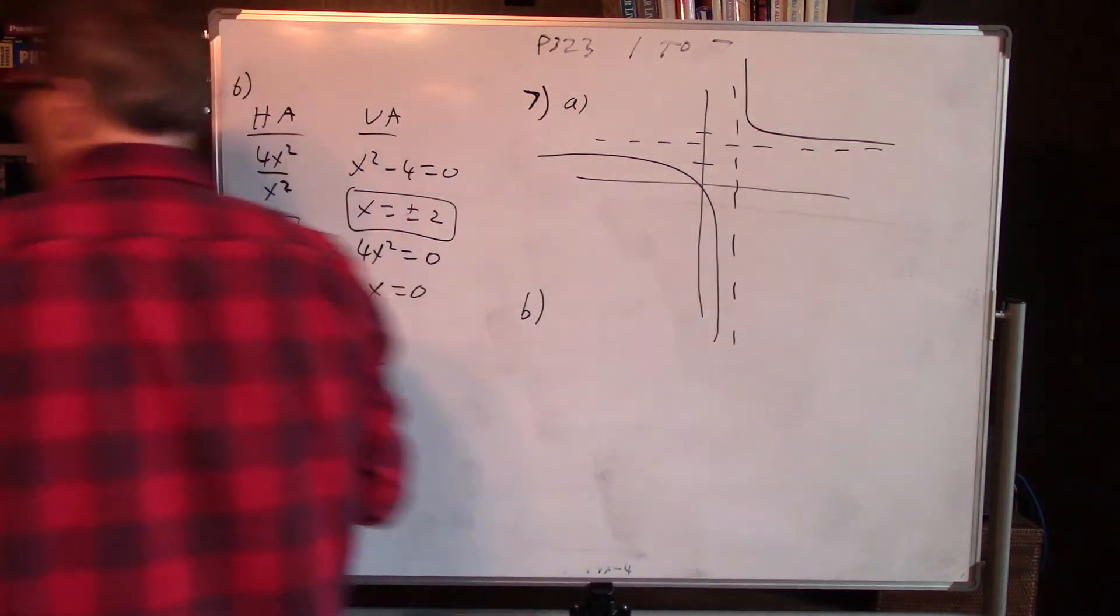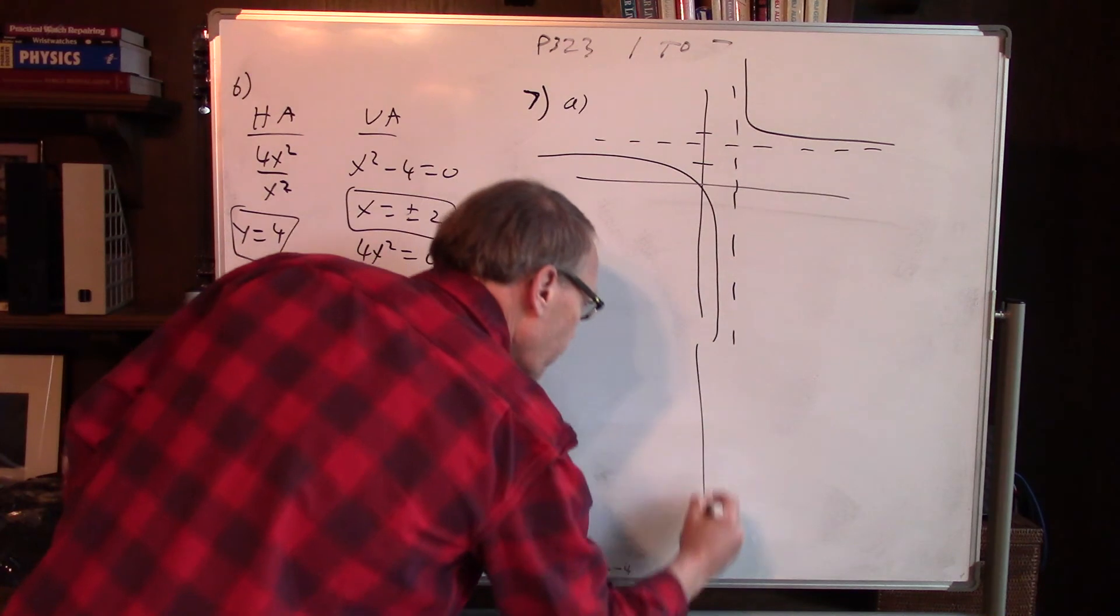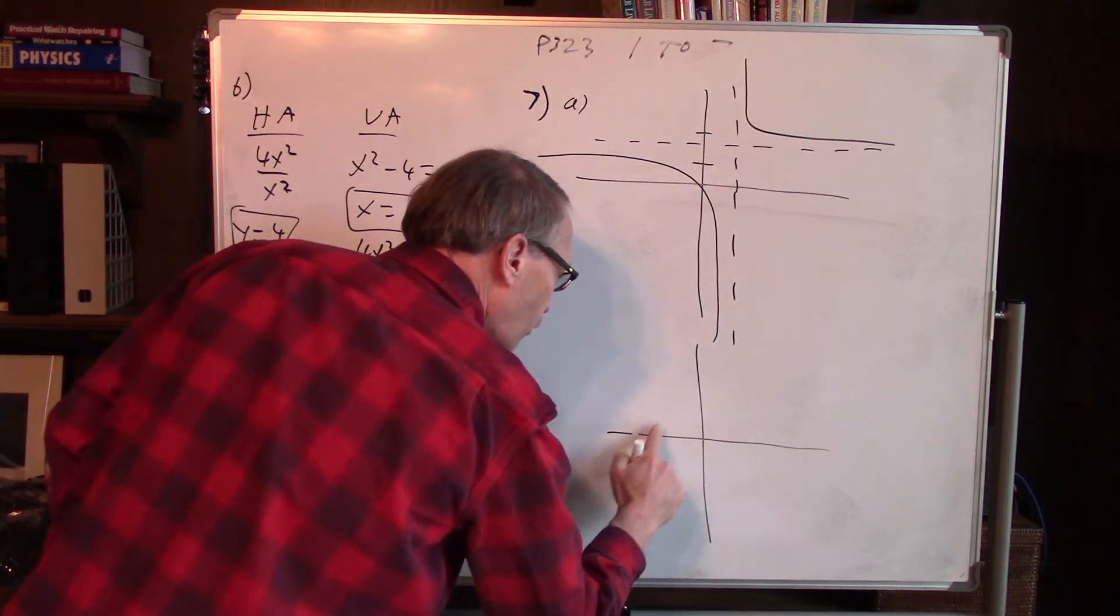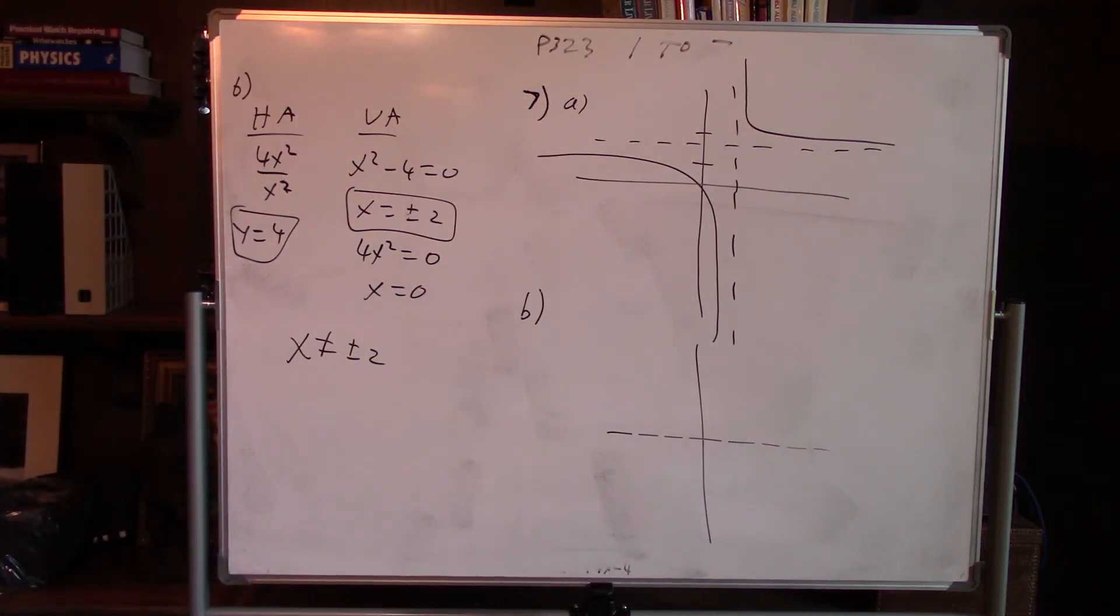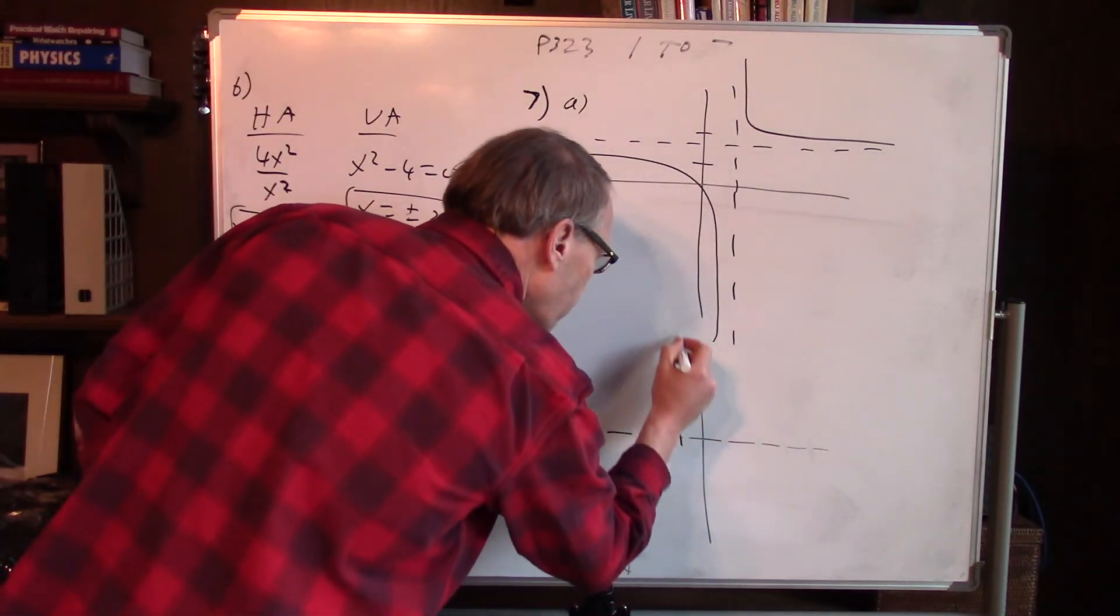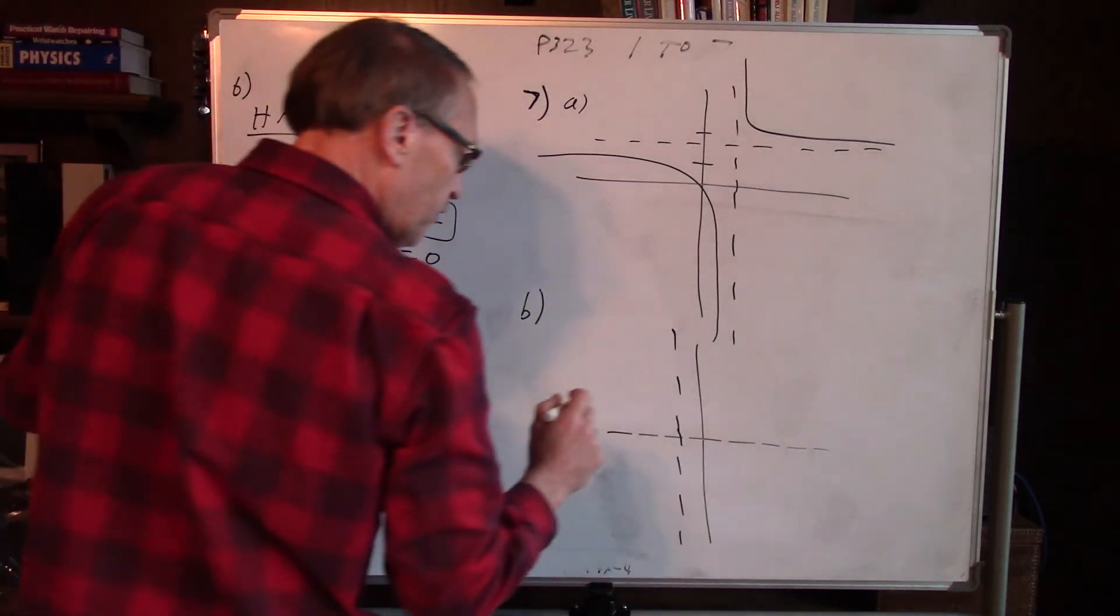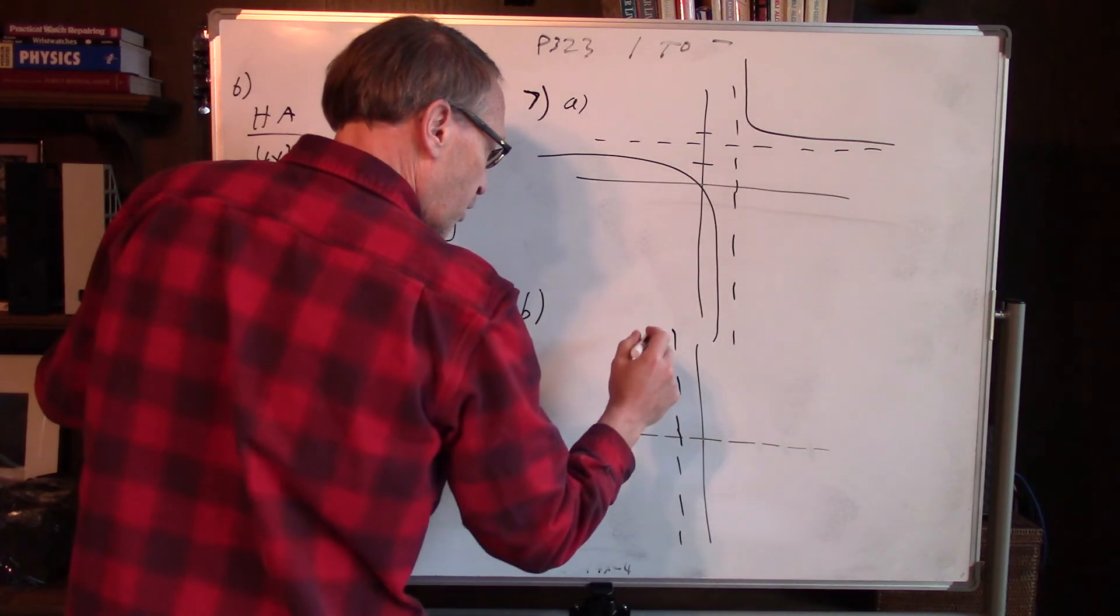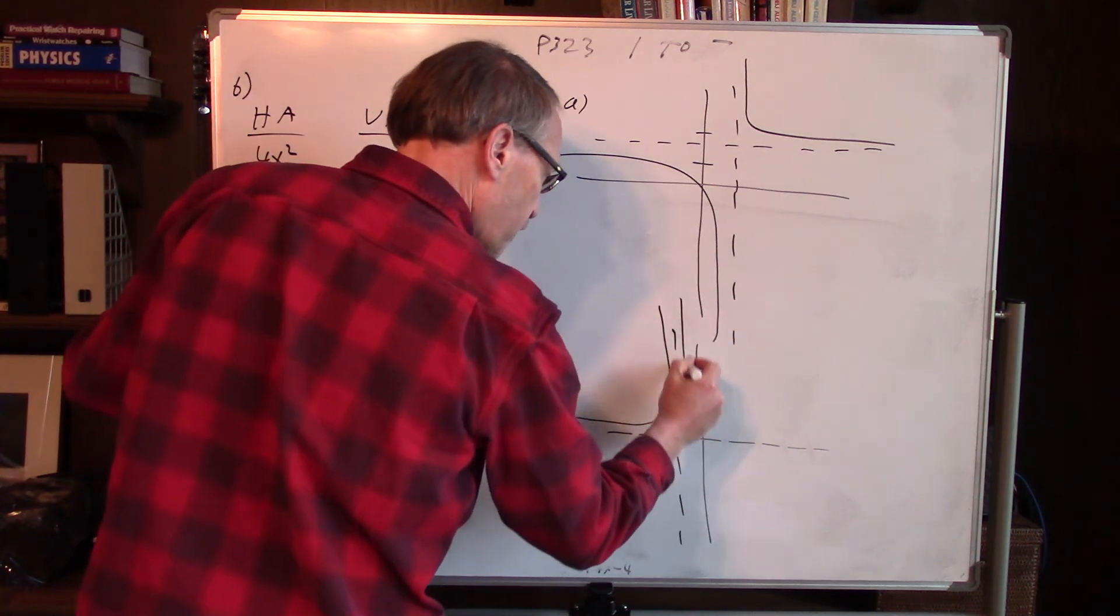Part B, our horizontal asymptote is 0. So if we do a sketch of that one, there's our horizontal, it's the x-axis. Vertical is at x equals minus 1, so minus 1 right here is our vertical. This is always positive. So as x gets close to this, it shoots up positive and goes this way. And then on the other side, it shoots like that.